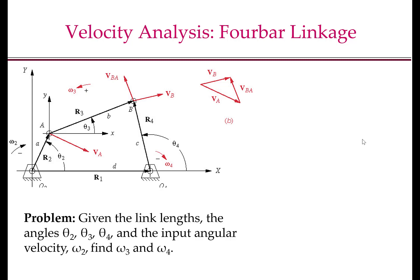In velocity analysis, the problem can be formally stated as follows. Given the link lengths, the angles theta 2, theta 3, and theta 4 — that is the position of the mechanism — and the input angular velocity omega 2, find omega 3, which is the angular velocity of the coupler, and omega 4, which is the angular velocity of link 4. Note that for doing velocity analysis, we assume that the position is known, meaning we have performed position analysis first.